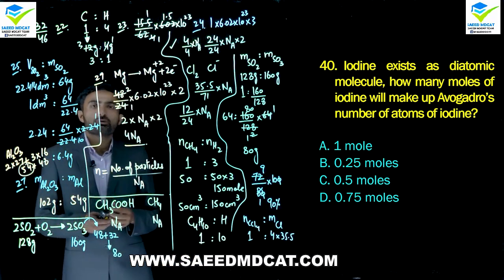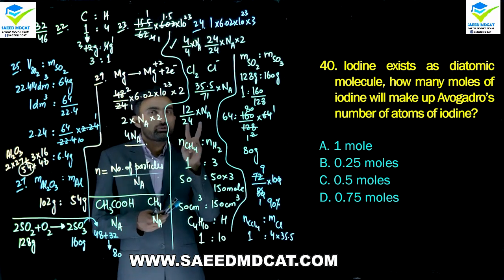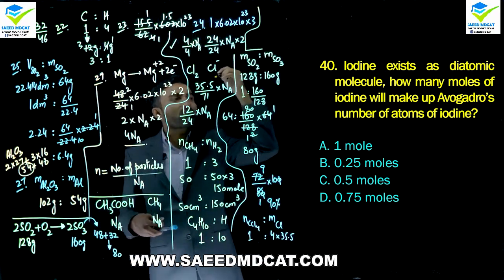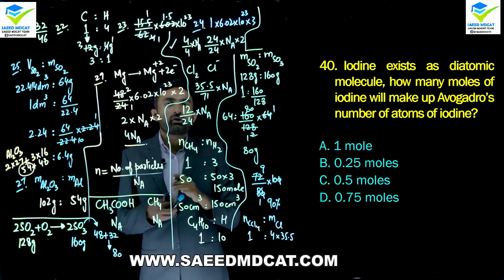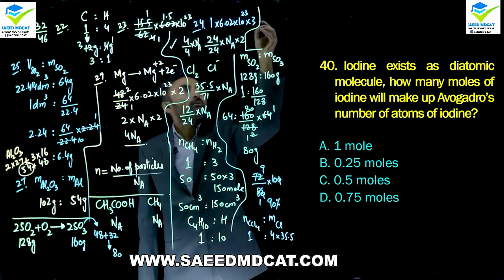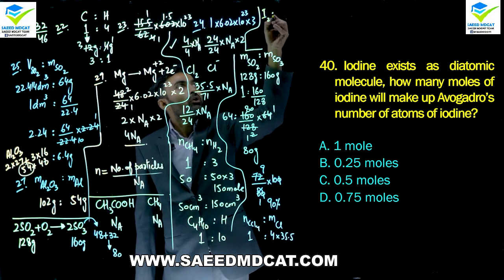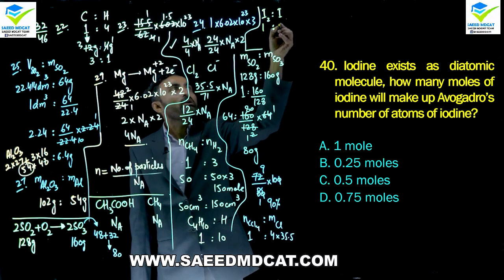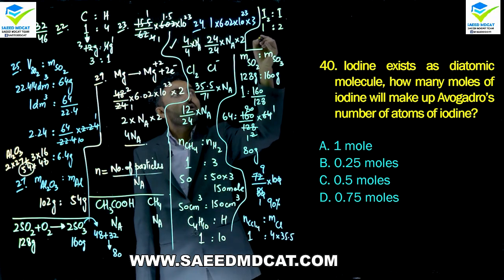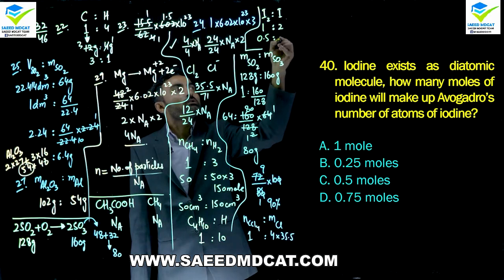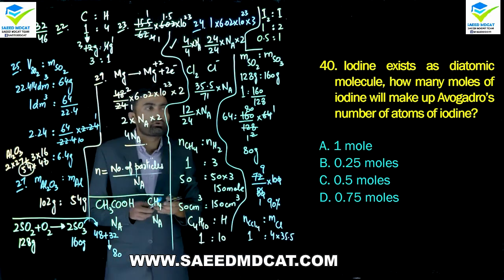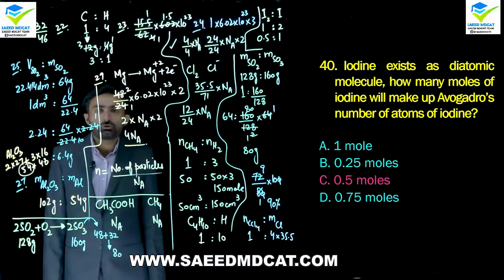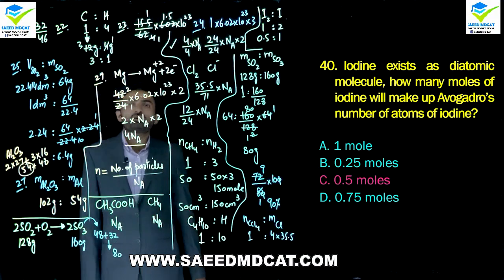Question 40: Iodine exists as diatomic molecule (I2). How many moles of I2 contain Avogadro's number of iodine atoms? One mole of I2 contains 2 moles of I atoms (2NA atoms). So to get NA iodine atoms we need 0.5 moles of I2. Charlie option (0.5 moles) is correct.